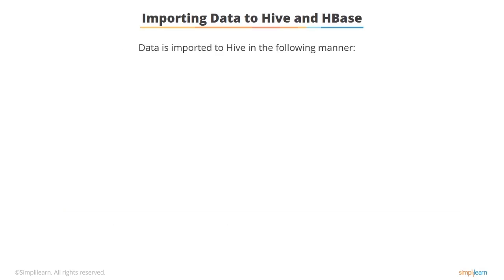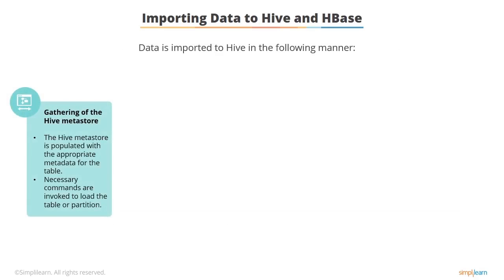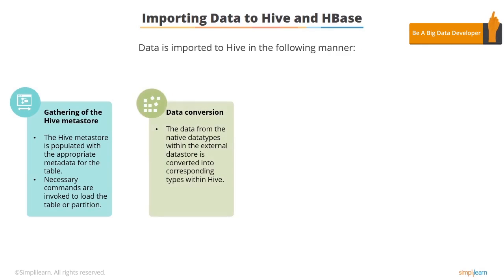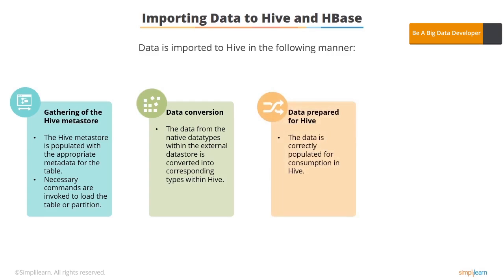Let's discuss the process of importing data to Hive and HBase. First, Sqoop takes care of populating the Hive metastore with appropriate metadata for the table and also invokes the necessary commands to load the table or partition. Using Hive import, Sqoop converts the data from the native data types in the external data store into the corresponding types within Hive. Sqoop automatically chooses the native delimiter set used by Hive. If the data being imported has a new line or other Hive delimiter characters in it, Sqoop allows the removal of such characters.